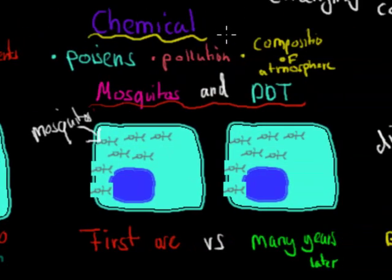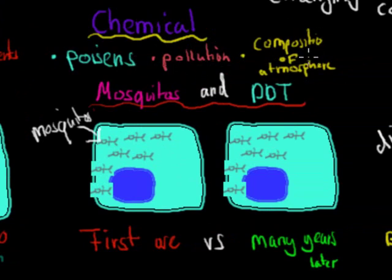For chemical conditions, we're talking about things like poisons being used to kill animals or organisms, pollution, and the composition of the atmosphere. Remember, the Earth itself used to have no oxygen, and as soon as oxygen — a chemical — started to appear in our atmosphere, that changed a lot for the life that came as well.